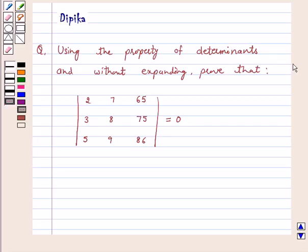Using the property of determinants and without expanding, prove that the determinant 2 7 6 5, 3 8 7 5, 5 9 8 6 is equal to 0. Let's start the solution.